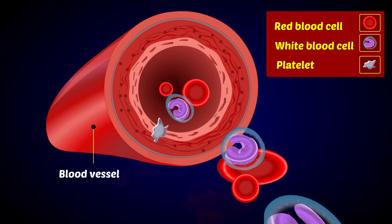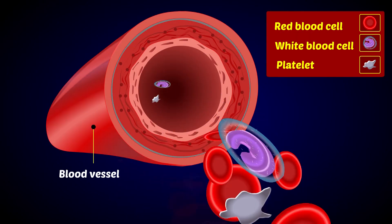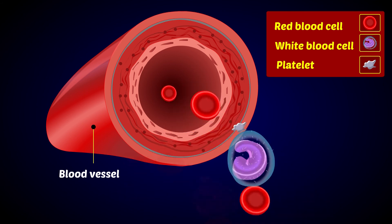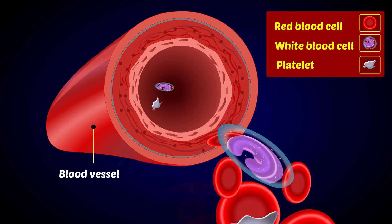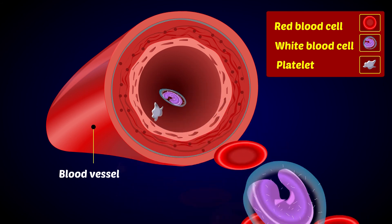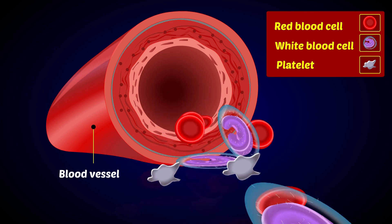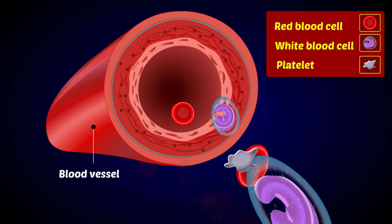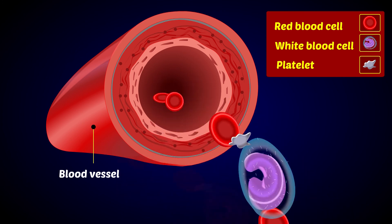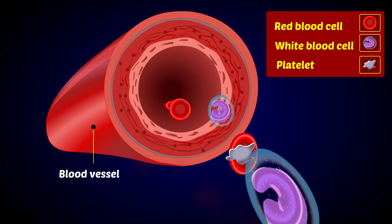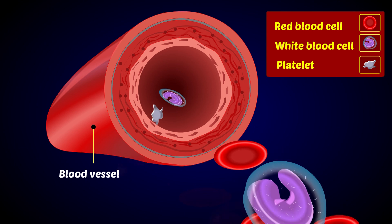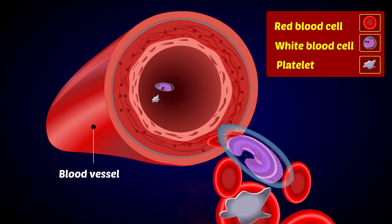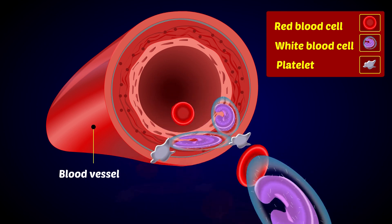Erythrocytes stay in circulation for about 120 days in males and 110 days in females. They are manufactured in the marrow of bones such as ribs and vertebrae, and they disintegrate in the spleen and liver.